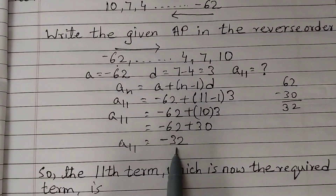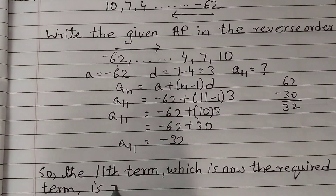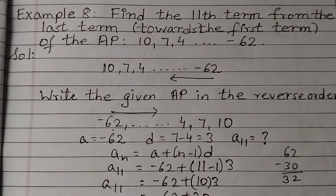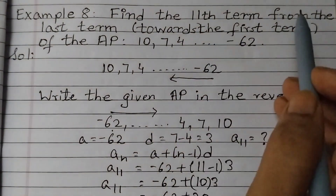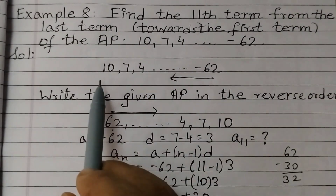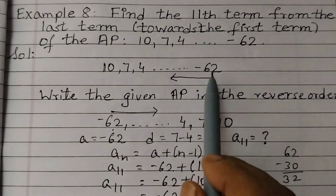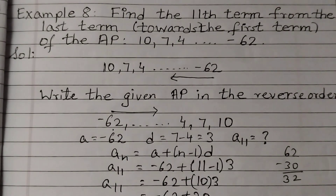So the 11th term, which is the required term, is minus 32. Just remember: when you are asked to find any term from the last term towards the first term, write the AP in reverse order so the last term becomes the first term, then apply the formula the same way to get the answer.